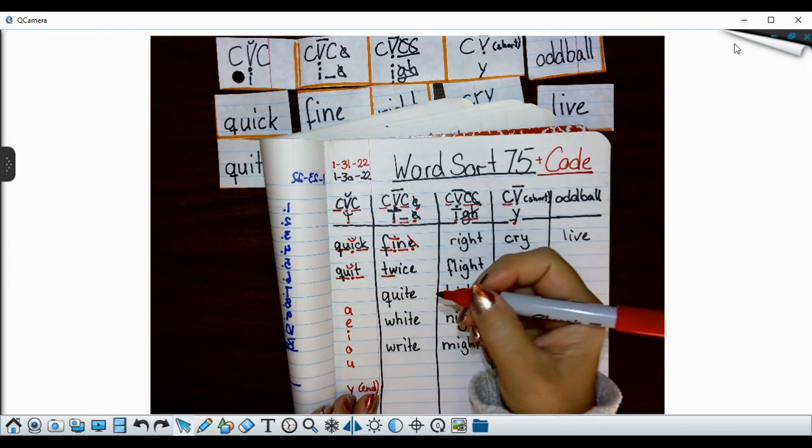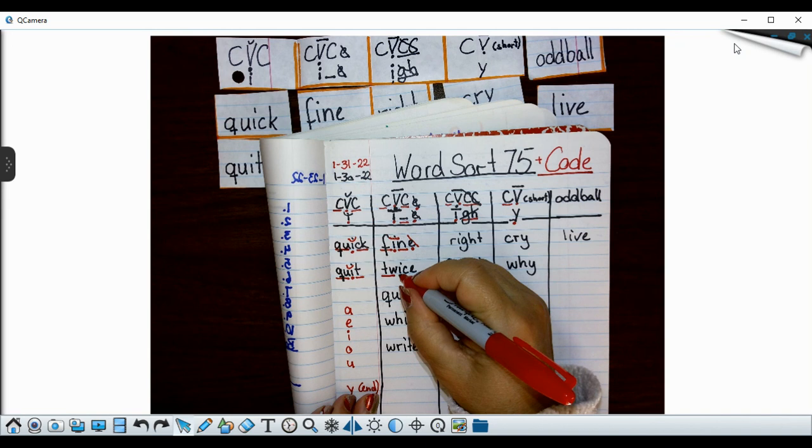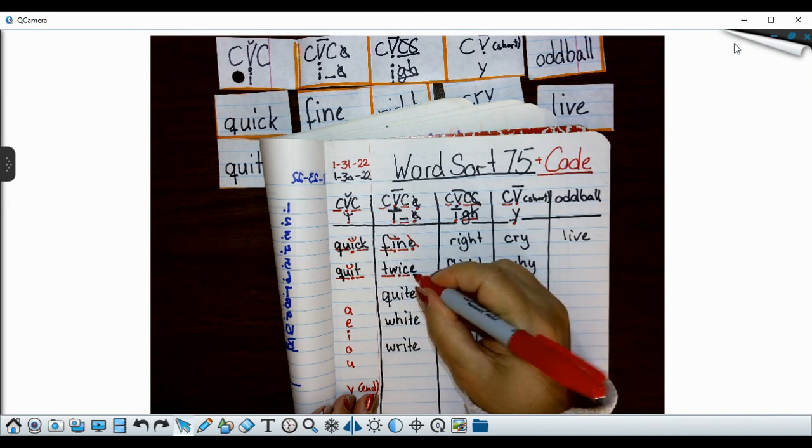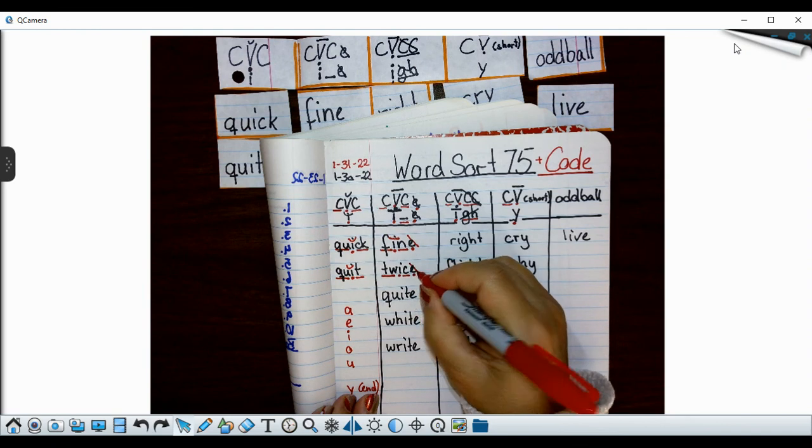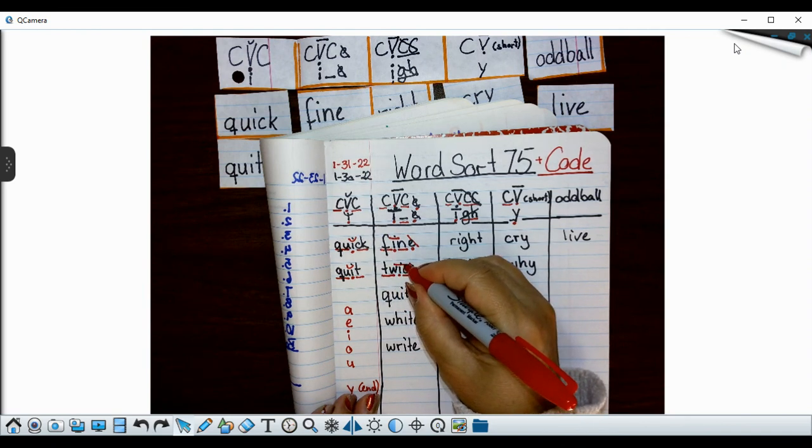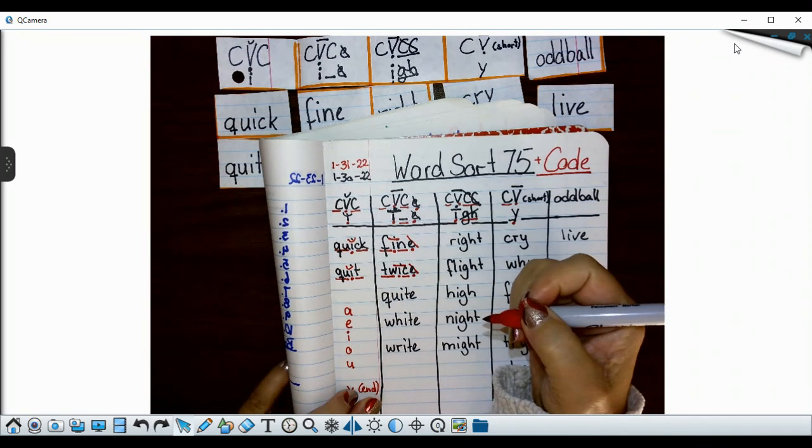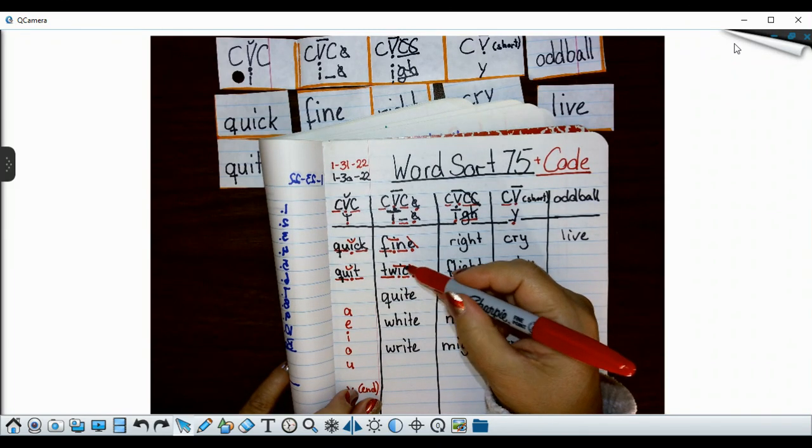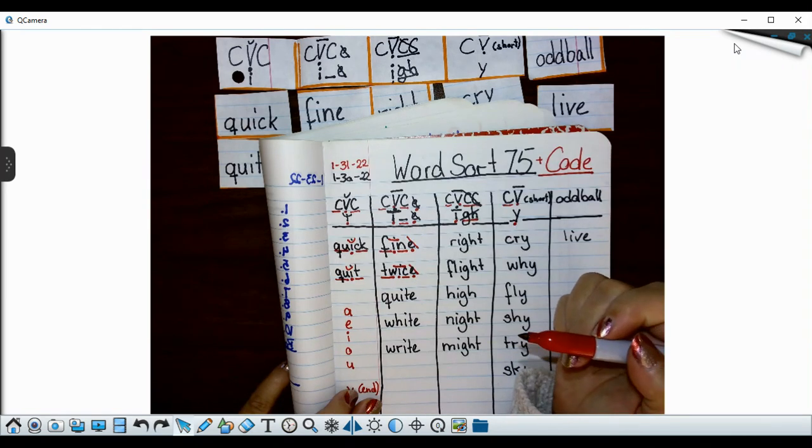All right, twice is a W blend. I have my I is my vowel. My C is my consonant. My E is my vowel. That E is silent and gives all its voice to that I making it long. All right I have my consonant, vowel, consonant, silent E making that long. Yep got it in the right column.